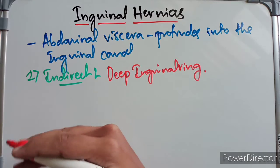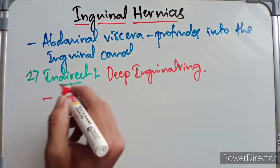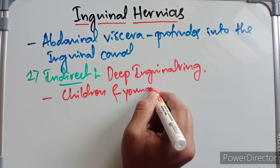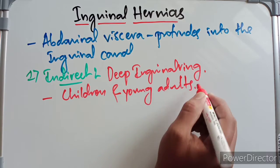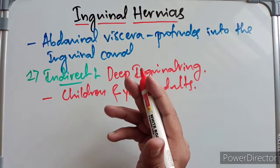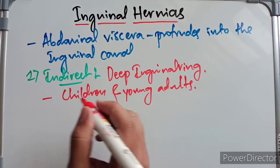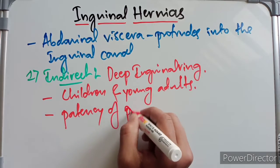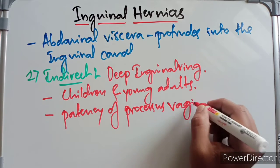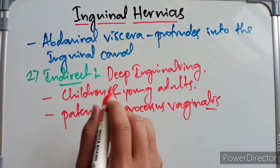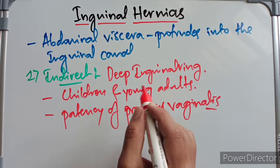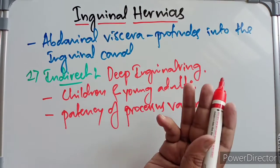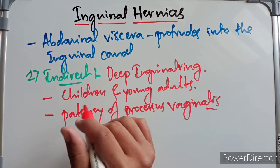The indirect inguinal hernia can be of two types: incomplete or complete. It is more common in children and young adults. The predisposing factor for this type of hernia is complete or partial patency of the processus vaginalis. Indirect inguinal hernias are more common than direct inguinal hernias and occur more often in males than females.